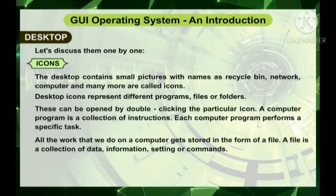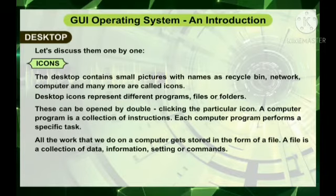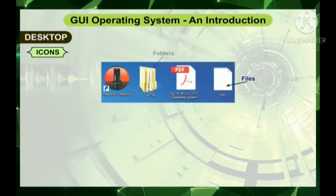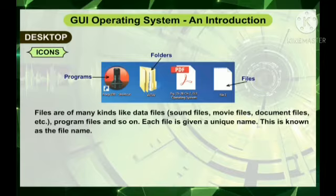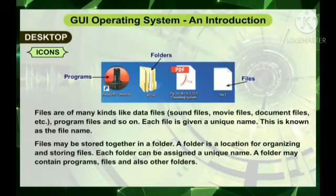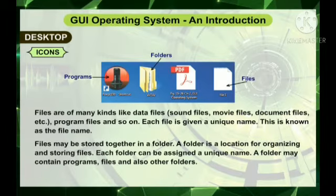All the work that we do on a computer gets stored in the form of a file. A file is a collection of data, information, settings or commands. Files are of many kinds like data files, program files and so on. Data files include sound files, movie files, document files etc. Each file is given a unique name, known as the file name. Files may be stored together in a folder. A folder is a location for organizing and storing files. Each folder can be assigned a unique name. A folder may contain programs, files and also other folders.